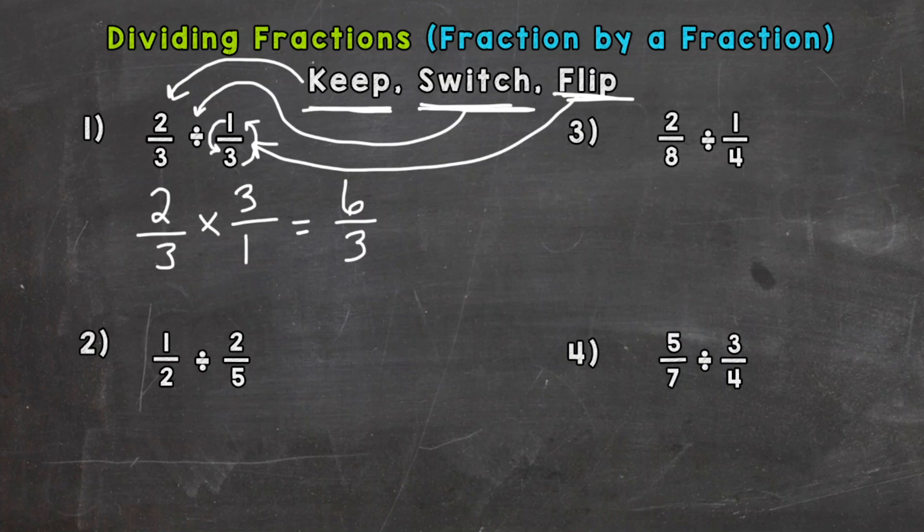But that's an improper fraction, meaning the numerator, the top number, is greater than the denominator. So we do not want to leave it like that. So we need to convert it to a whole number or mixed number. So we need to divide our numerator six by the denominator three. So how many whole groups of three can we pull out of six? And the answer to that is two. Now there's no remainder or anything left over, so we get a whole number for our quotient or answer to that division problem. So there you have it.